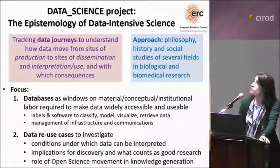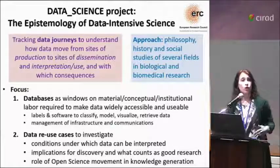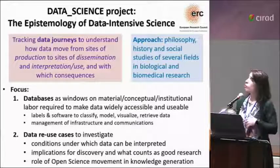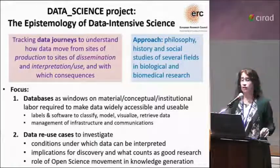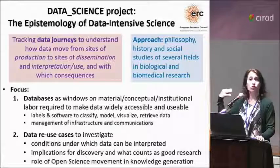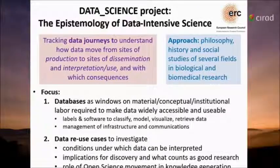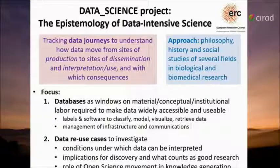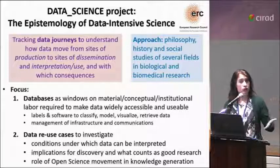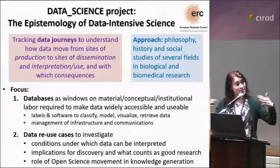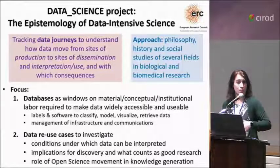What we try to do in this project is to track what we're calling data journeys — to really understand how data move from sites of production to all sorts of different sites of dissemination, in particular data infrastructures, and then sites of interpretation, aggregation, and use. What are the consequences of these movements? The approach we're using takes tools from the philosophy of science, the history of science, and qualitative social studies of science — particularly interviews and fieldwork — to try and understand how that works. We're doing this across several different subfields, both of biology and biomedicine.